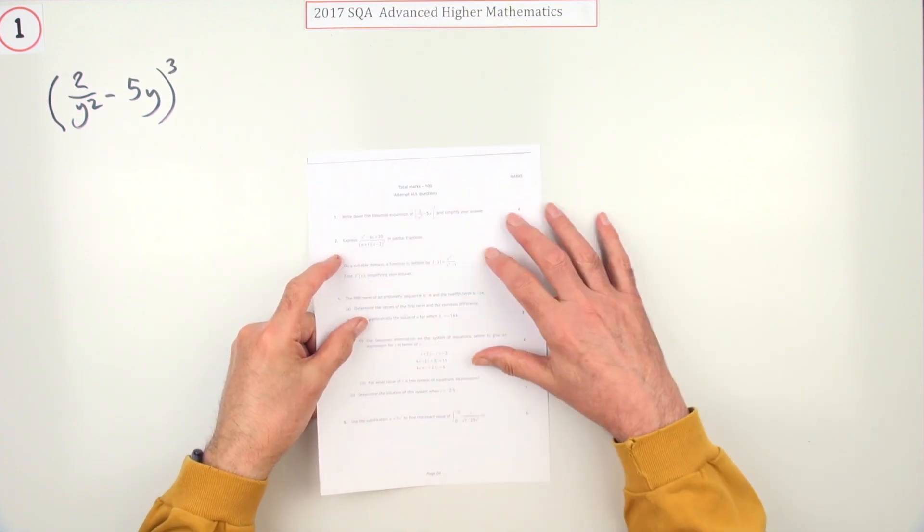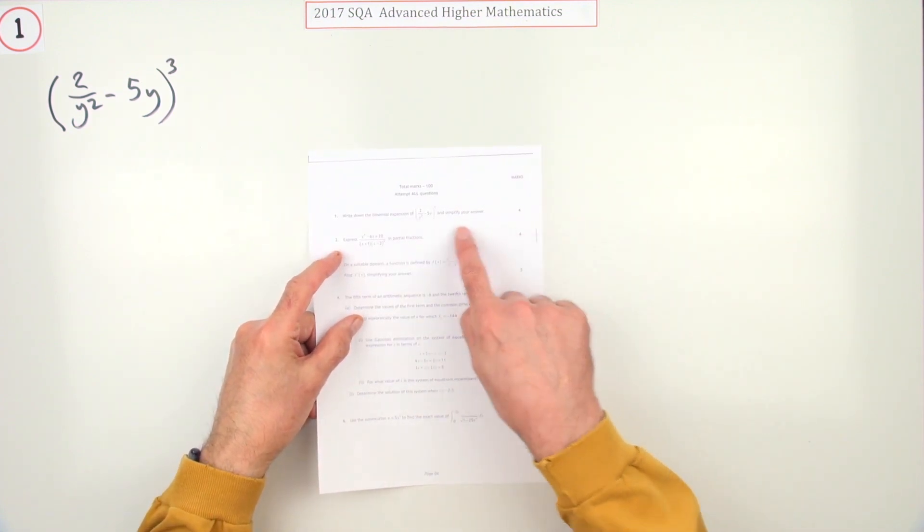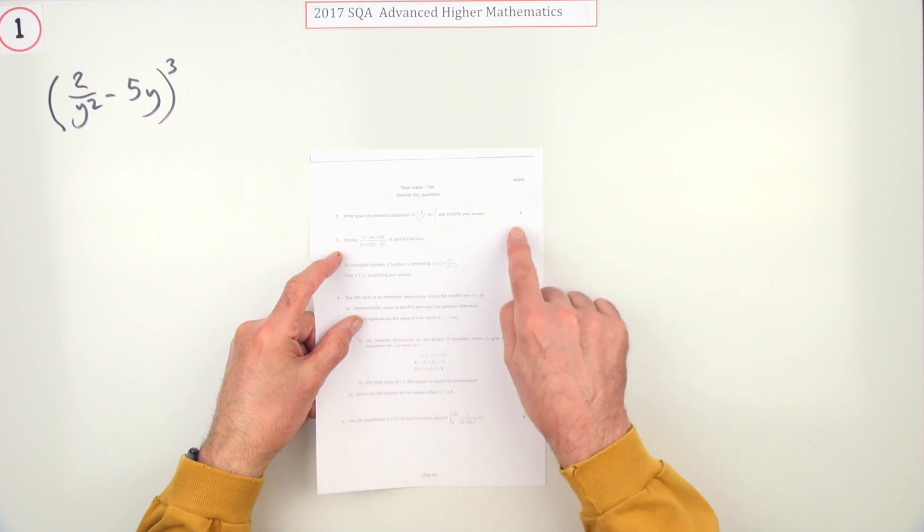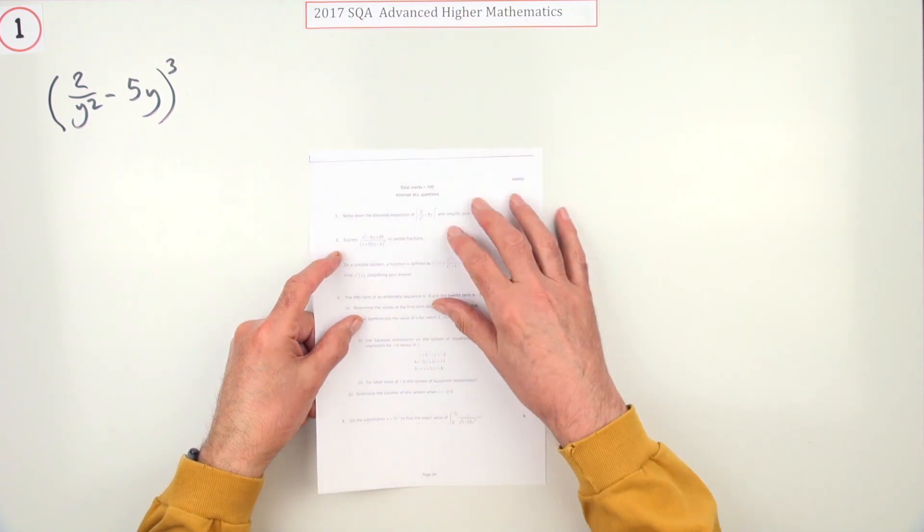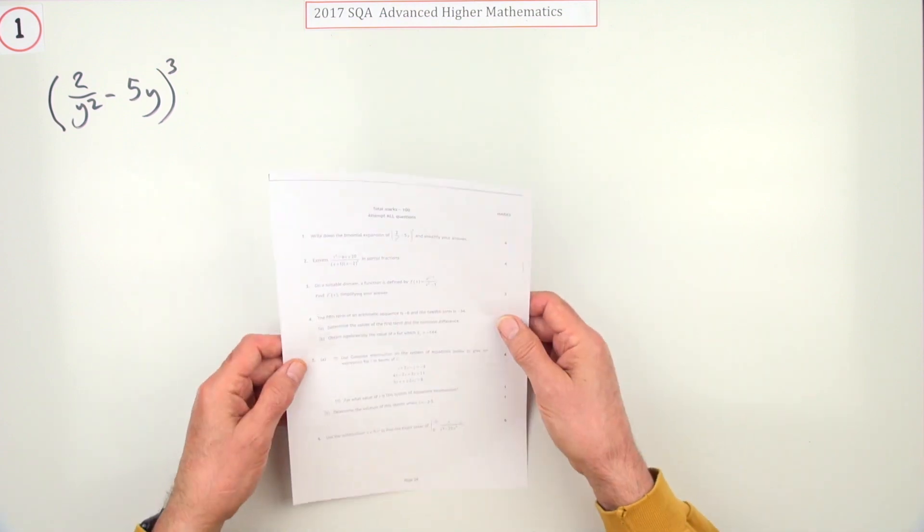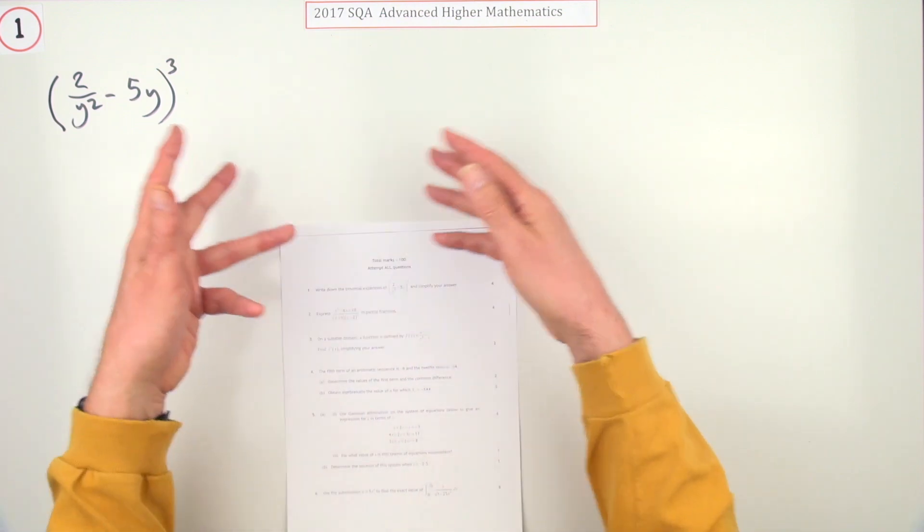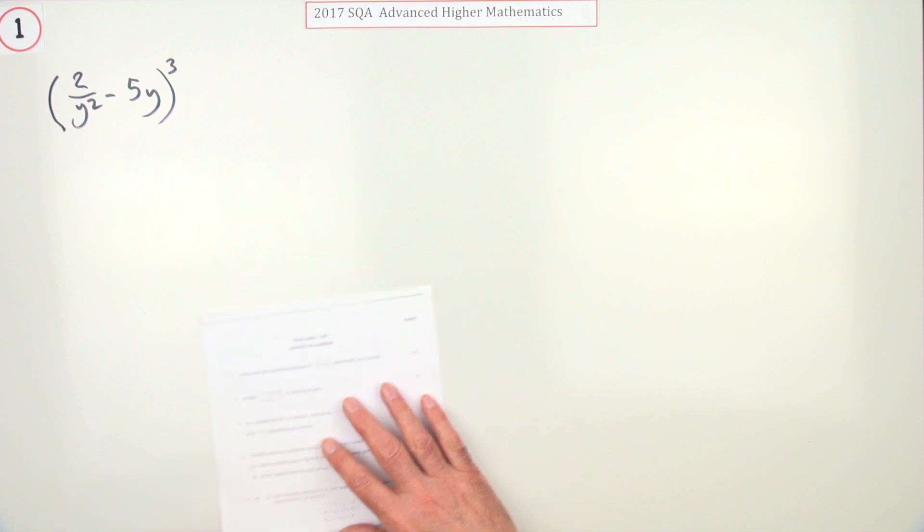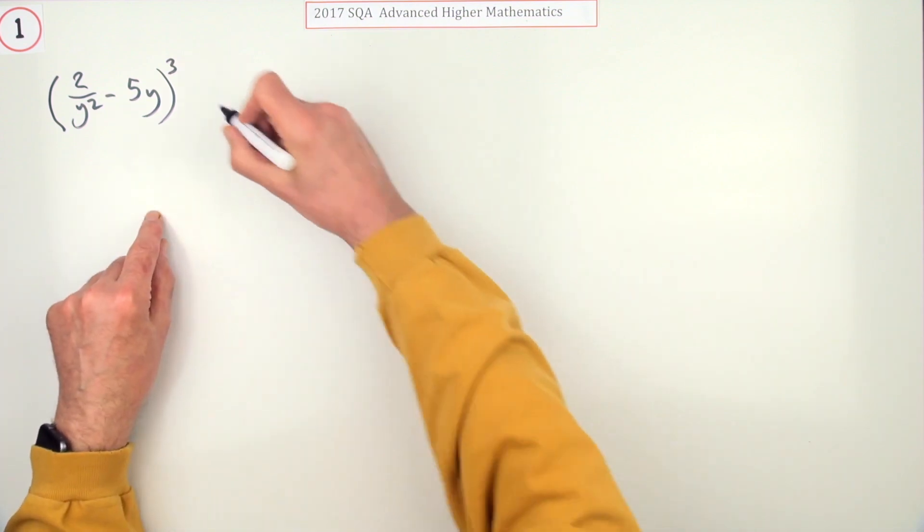Number one from the 2017 Advanced Higher exam. The binomial expansion, four marks. These questions almost seem to alternate between expand it all out or find a particular term. This time it's expand it all out, but it's quite sensible—power three. That's sufficient to demonstrate you know how to expand a binomial without becoming too tedious.